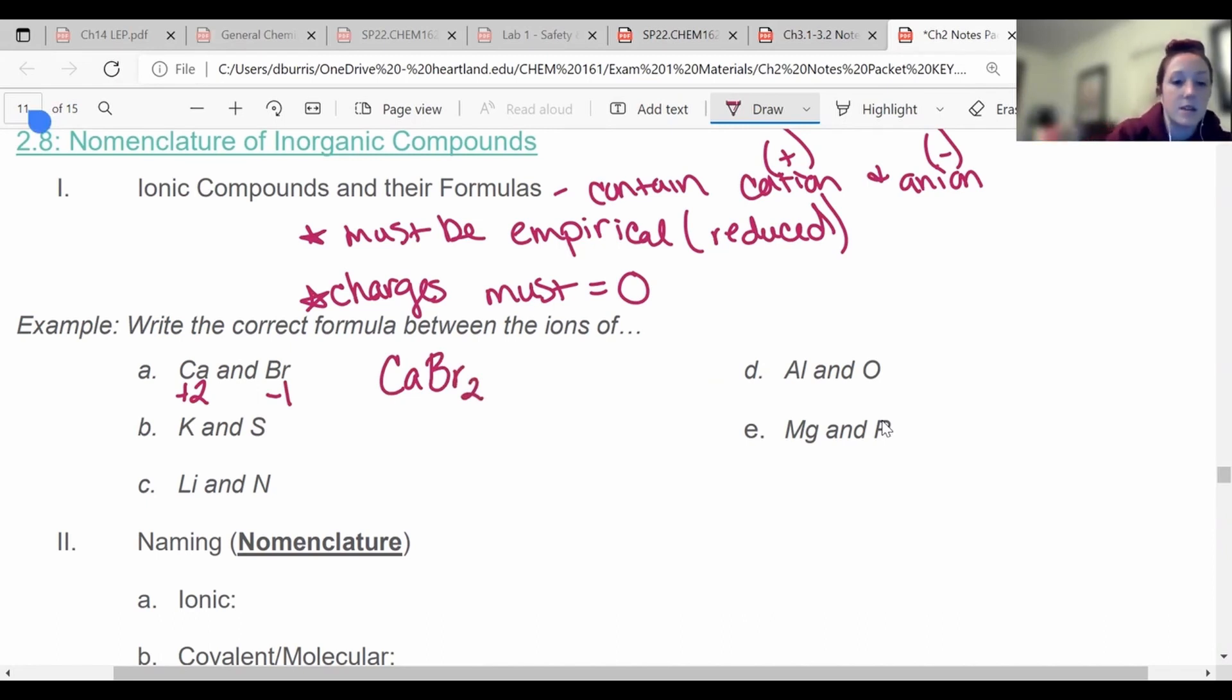I'm going to do the same thing with the next one. Potassium is plus one. Sulfur is minus two. So I actually need two potassiums for every one sulfur. Now I have another method to do this when it starts getting more complicated. It's called the crisscross and reduce method. Balancing them out always works, but crisscrossing and reduce might save you some time when you get some more complicated things.